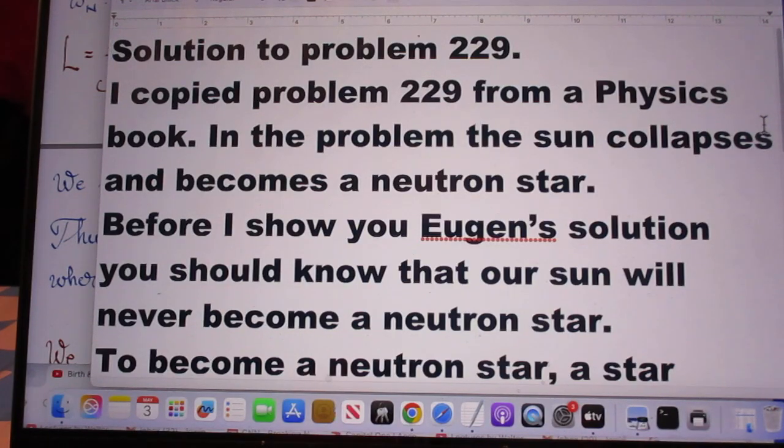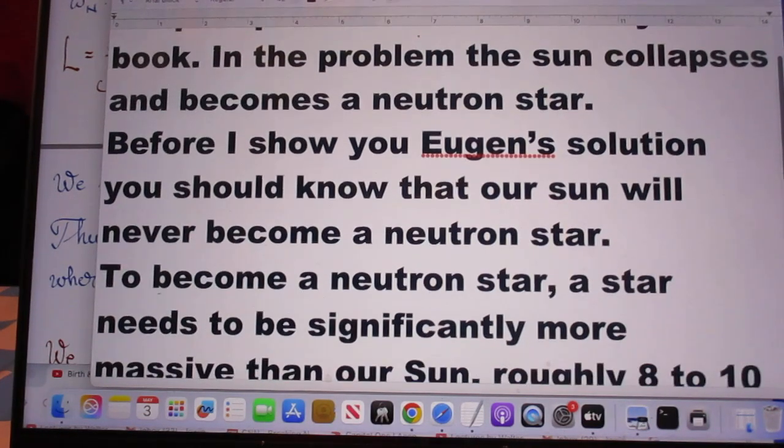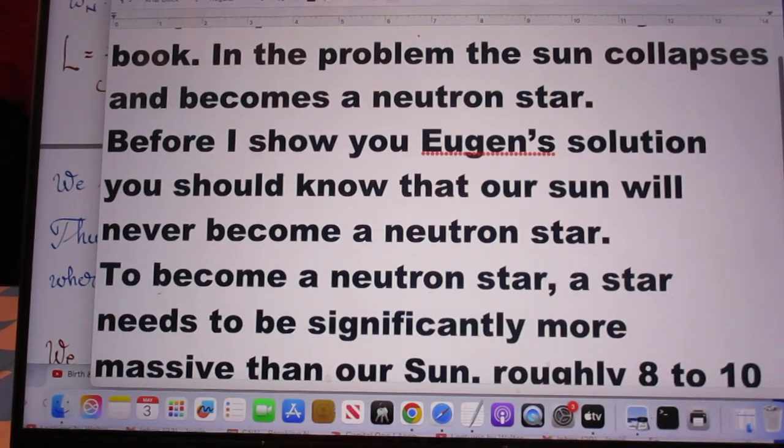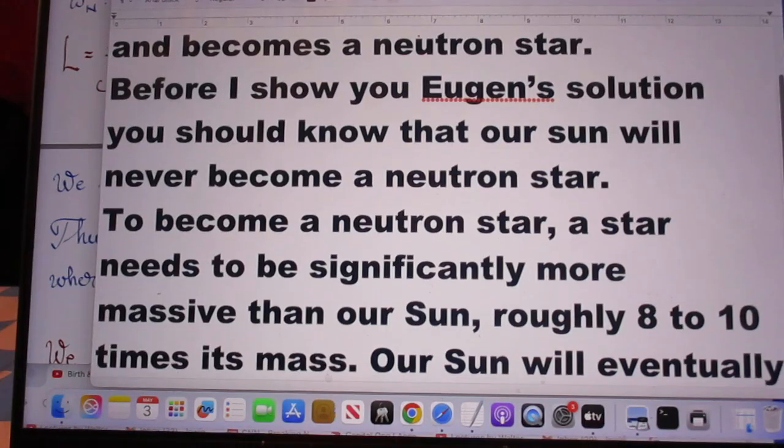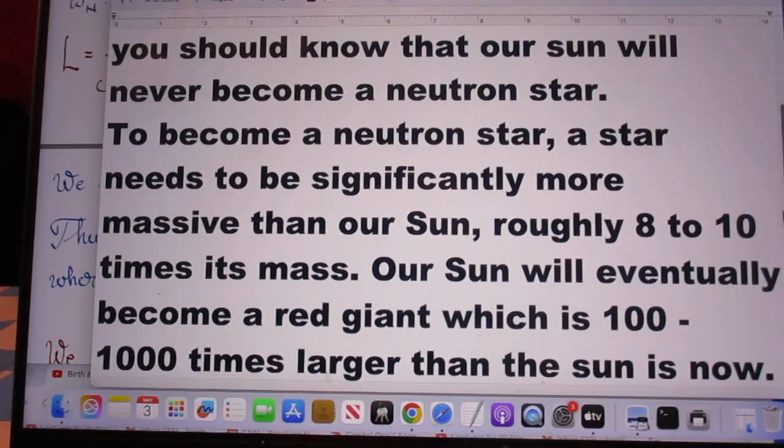Here follows Eugen's great solutions to problem 229. I copied problem 229 from a physics book. In that problem the sun collapses and becomes a neutron star. Before I show you Eugen's wonderful solution, you should know that our sun will never become a neutron star.